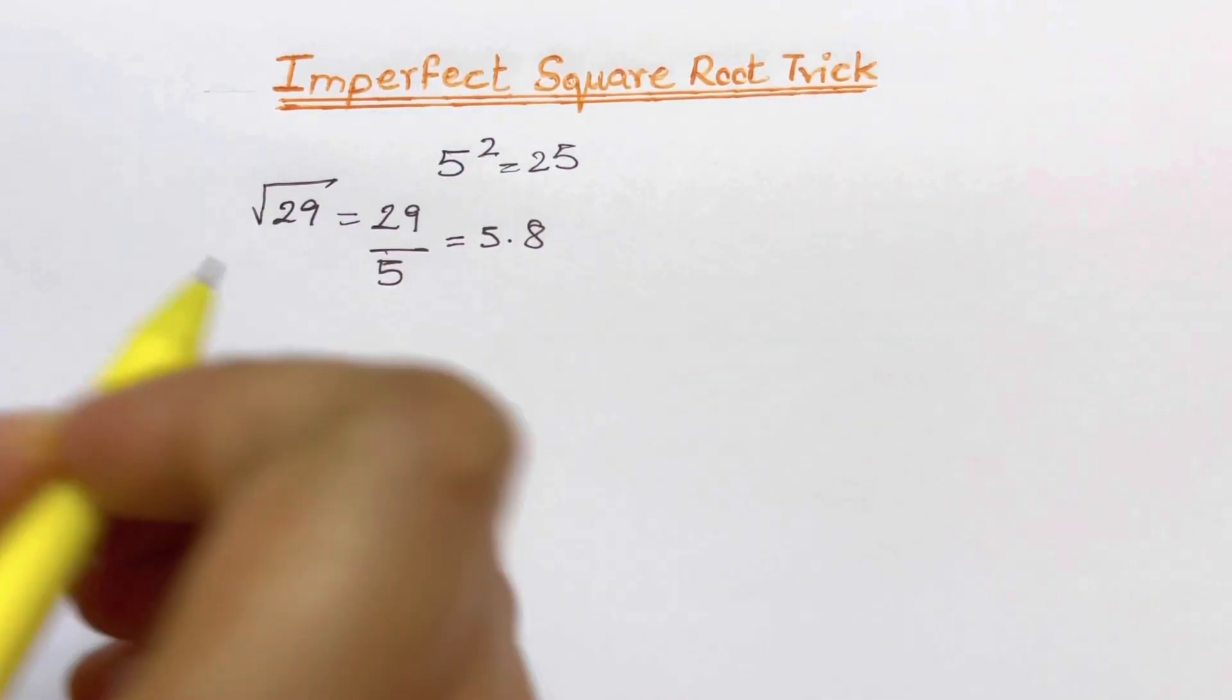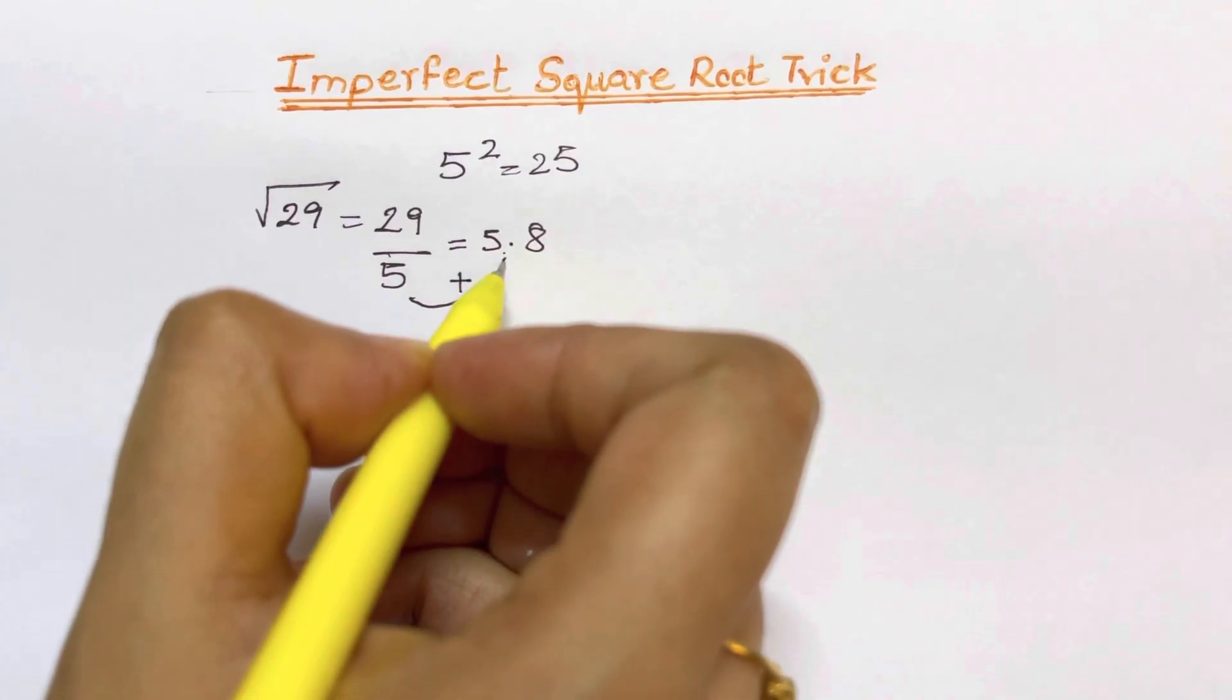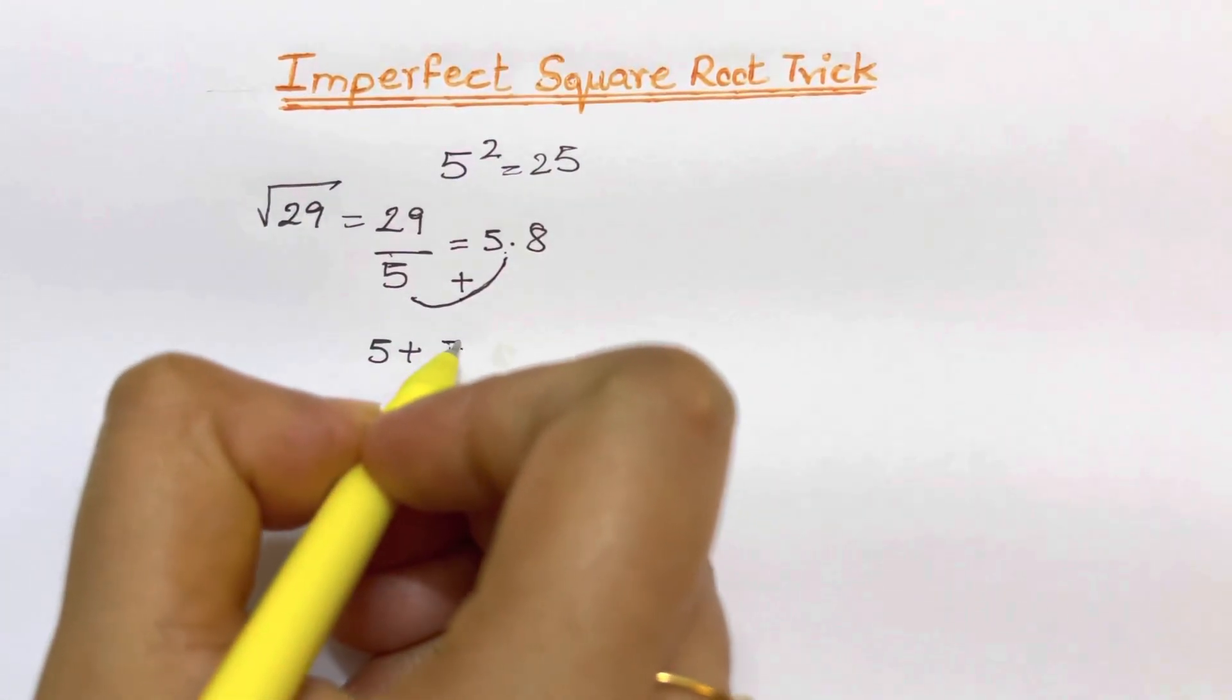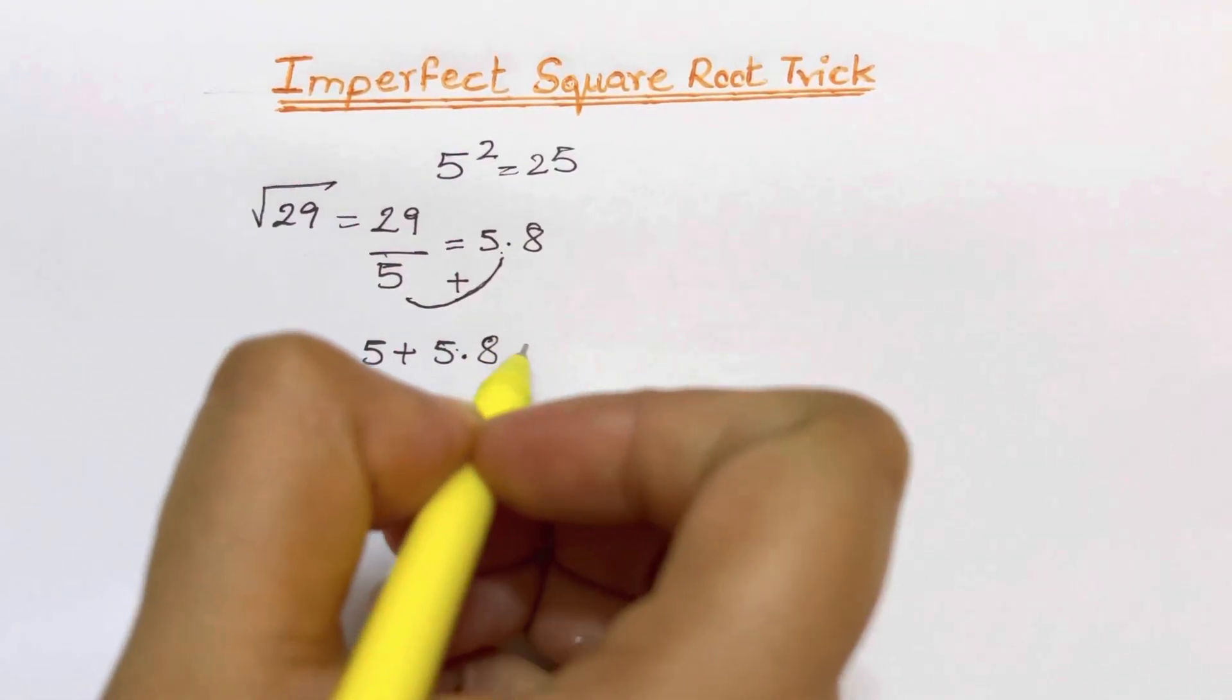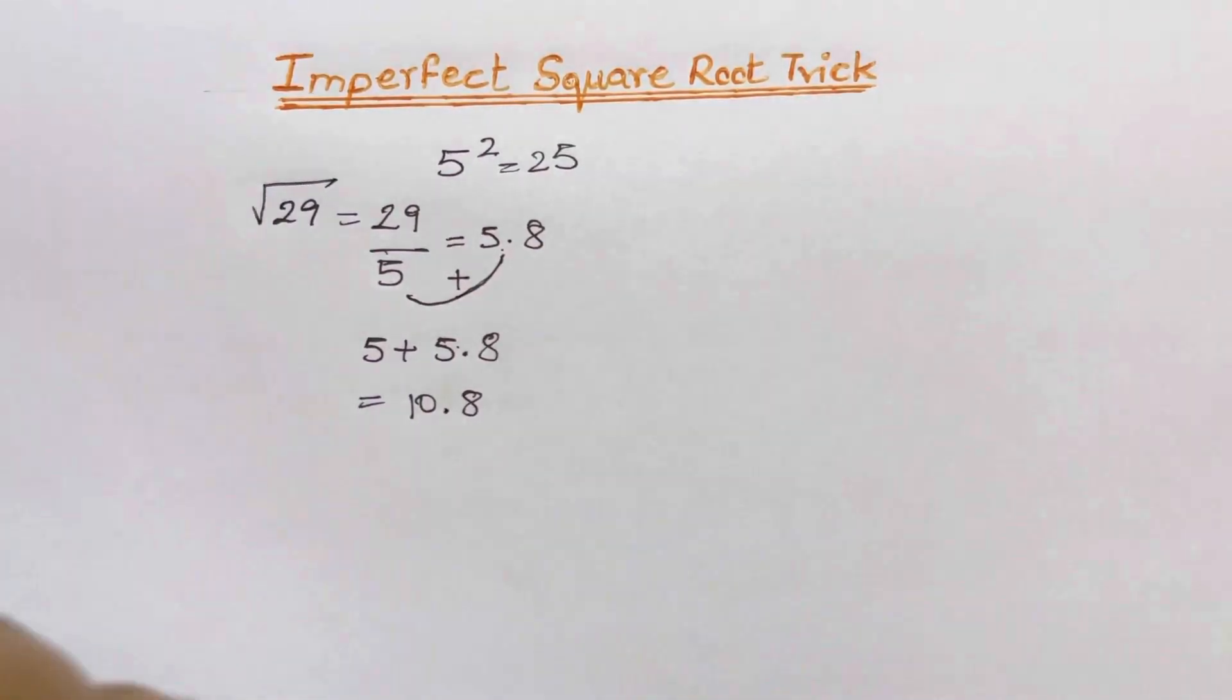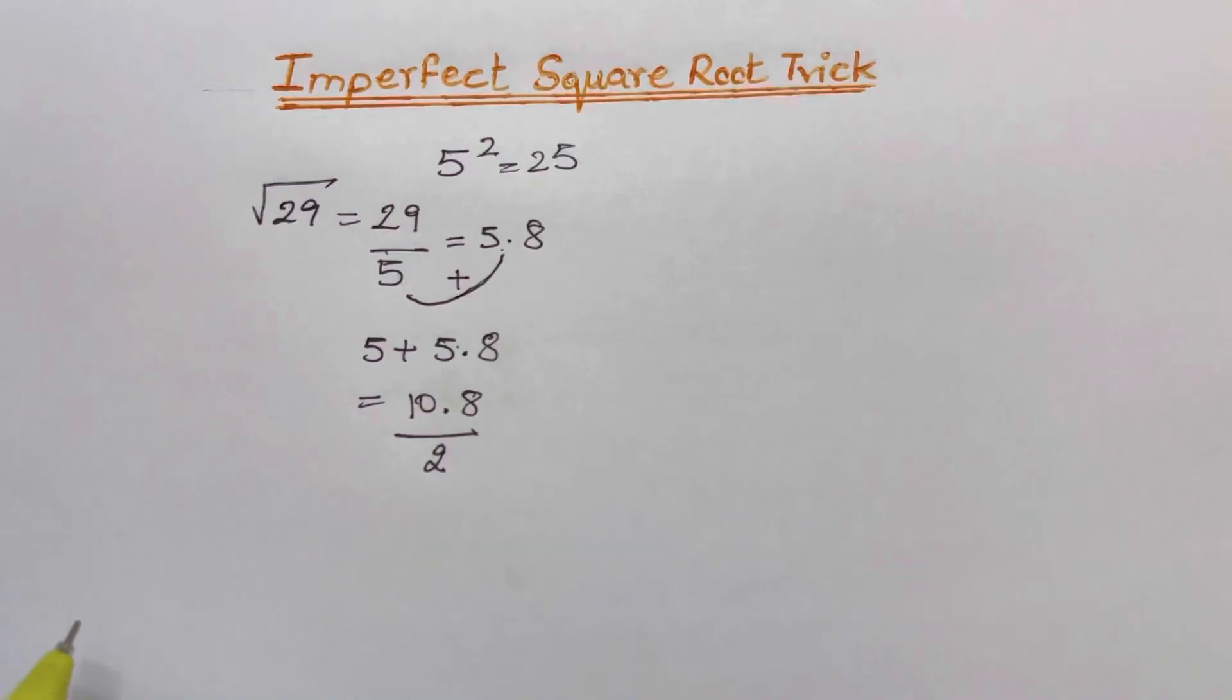Now our second step is to add this 5 to 5.8. So 5 plus 5.8 will give you 10.8. Now the third and last step is to divide this 10.8 by 2.